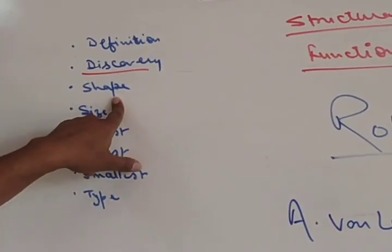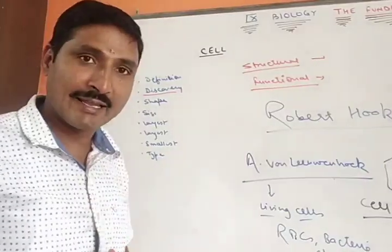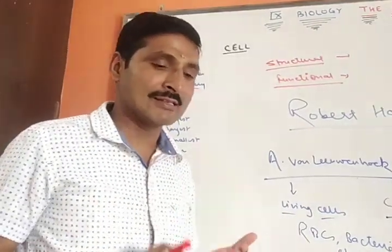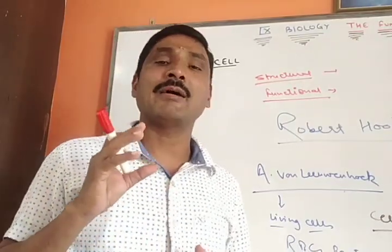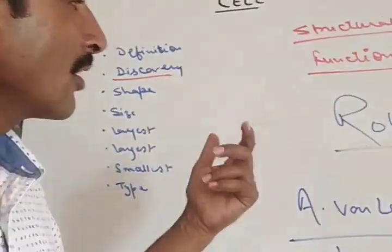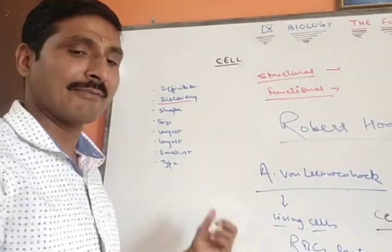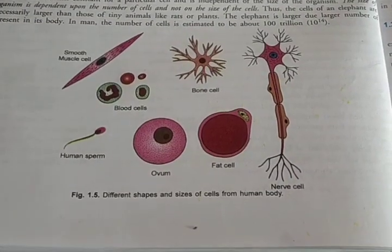Now, we come to shape of the cell. Cells are having different different shapes. Some cells are cuboidal, some are columnar, some are branch of tree like, some are irregular, some are amoeba shaped, and some are columnar, cuboidal, etc. These are the different shapes of cell.